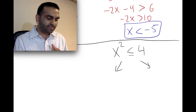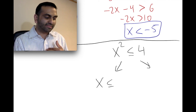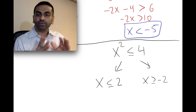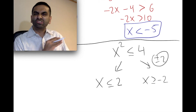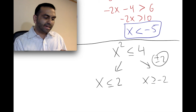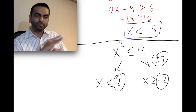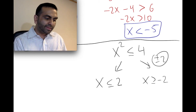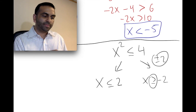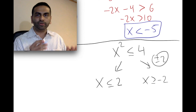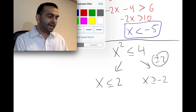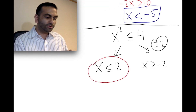So instead of x is less than or equal to plus or minus 2, you split it: x is less than or equal to 2, AND x is greater than or equal to negative 2. All we're doing is splitting the right-hand side into positive 2 and negative 2, keeping the same sign for the positive version, and flipping the sign for the negative version.